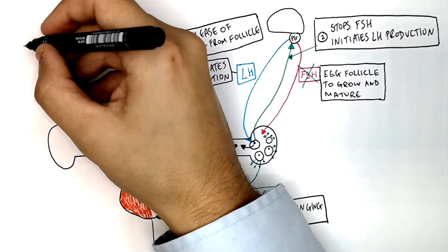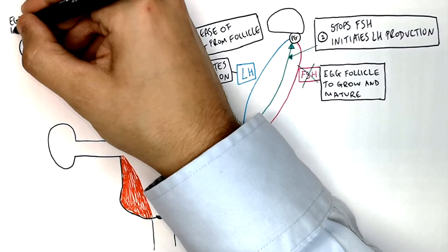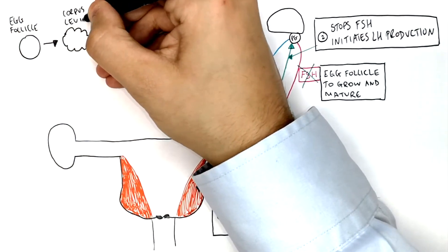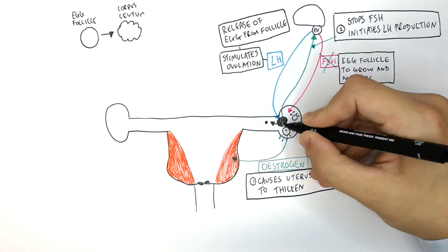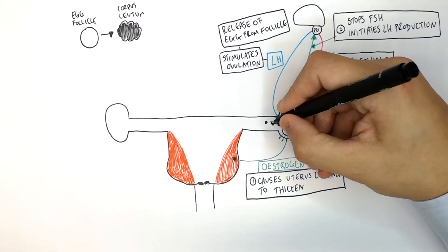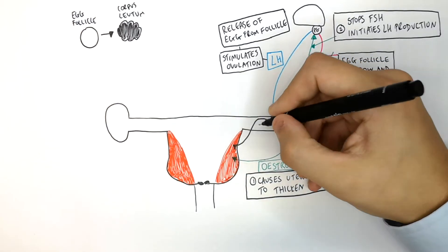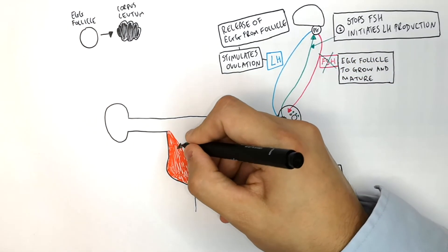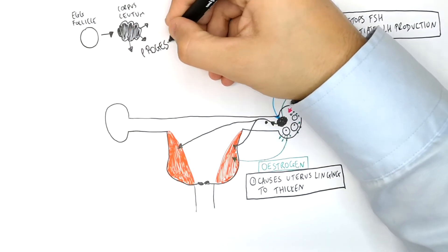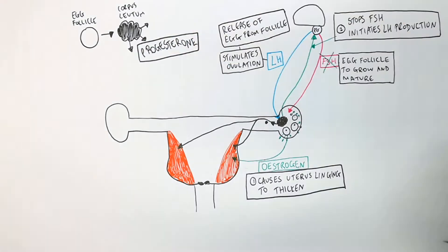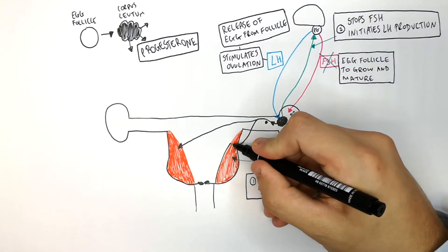After ovulation, the egg follicle turns into the corpus luteum. The corpus luteum in the ovary produces progesterone, indicated by the black line, and it goes to the uterus lining.